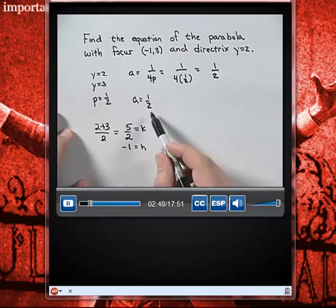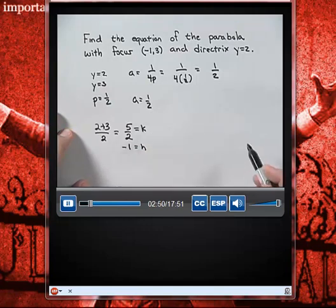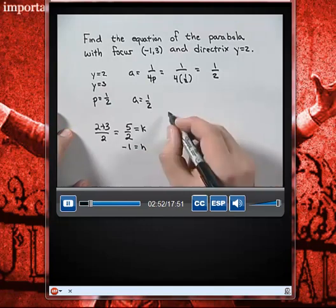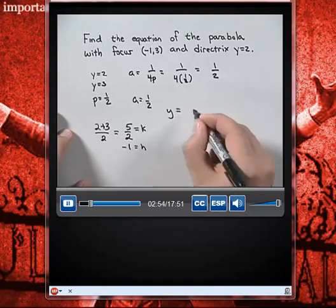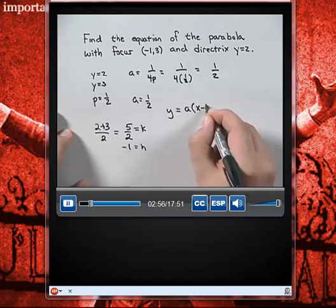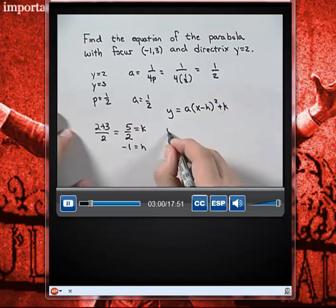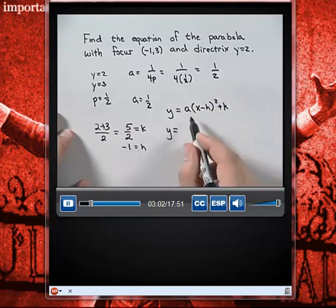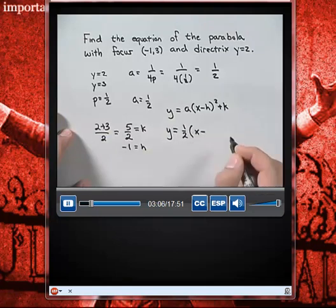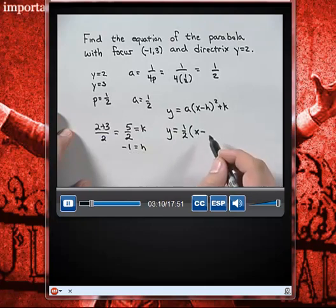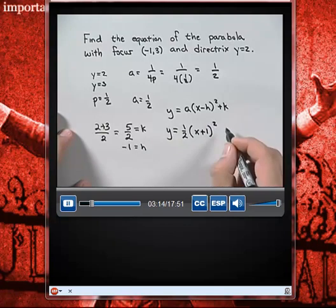So the value of h is equal to negative 1 and k is equal to 5 halves. Taking our values of a, h, and k and substituting them into our equation y equals a times (x - h) squared plus k, we get y equals 1 half times (x minus negative 1) squared, which is (x + 1) squared, plus 5 halves.